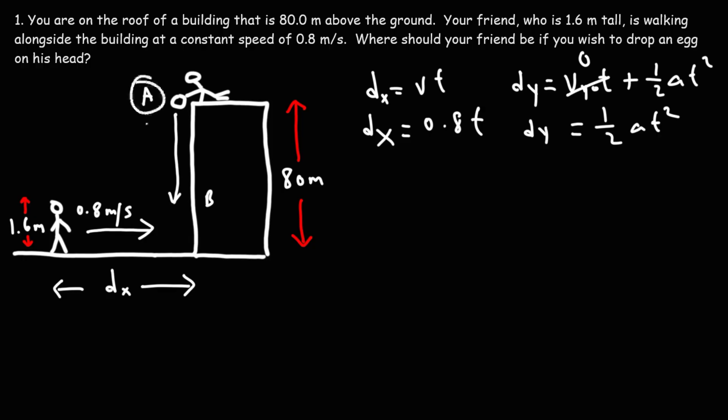Now, what is the distance between A and B? The distance that the egg is going to fall by, or its vertical displacement. It's the difference between the height of the building and the height of your friend. So 80 minus 1.6, that's going to be 78.4 meters.